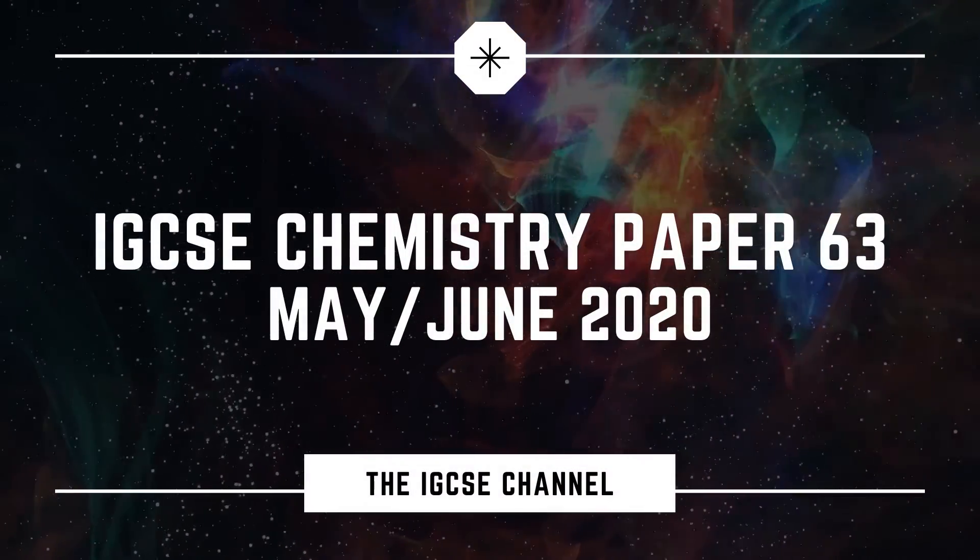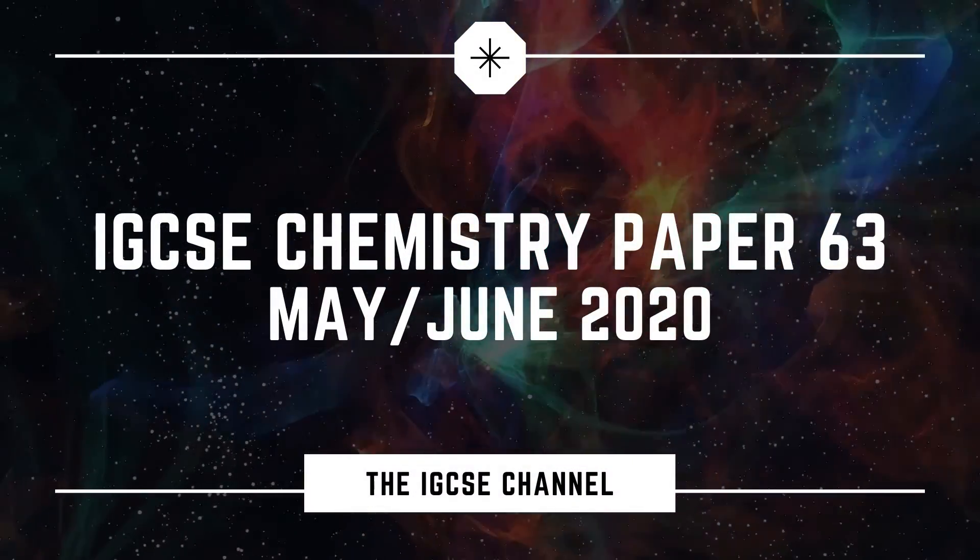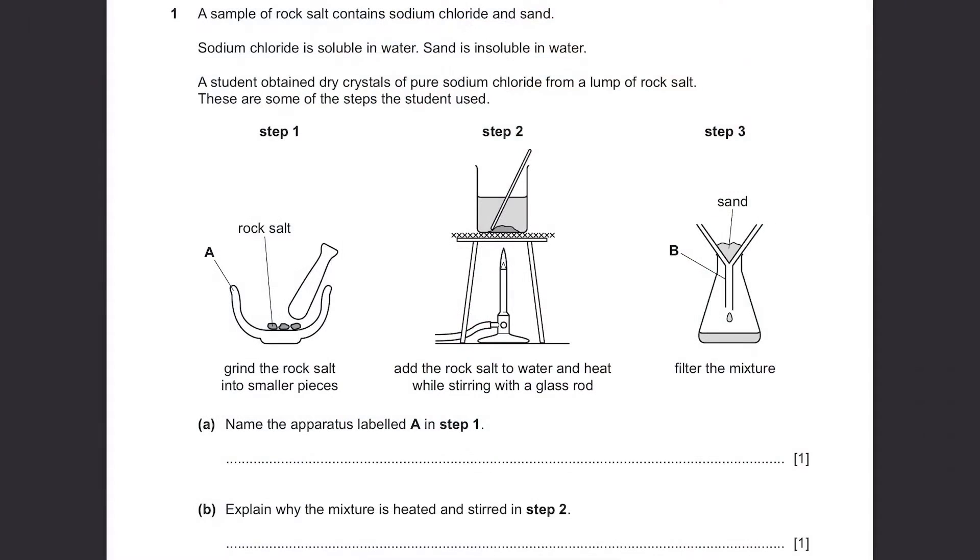Cambridge IGCSE Chemistry Paper 63, Question 1. A sample of rock salt contains sodium chloride and sand. Sodium chloride is soluble in water, sand is insoluble in water. A student obtained dry crystals of pure sodium chloride from a lump of rock salt. These are some of the steps the student used.